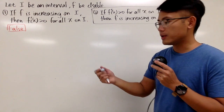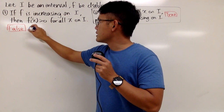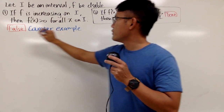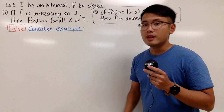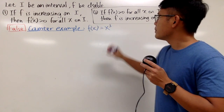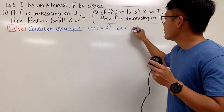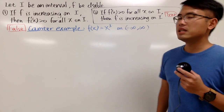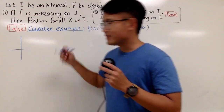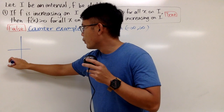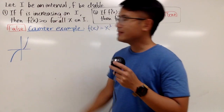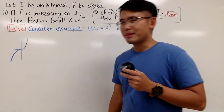So here is the counterexample I would like to use — and of course, maybe you can come up with a different counterexample. The one I would like to use is the function f(x) = x to the third power on the interval negative infinity to positive infinity. As we all know, x to the third power looks like this — it's going up, then flat momentarily, then going up again. I know my picture is not the best, but I tried.